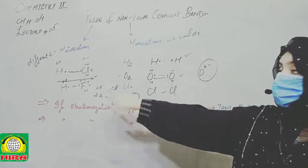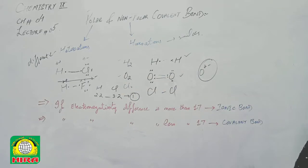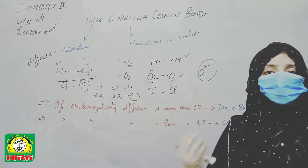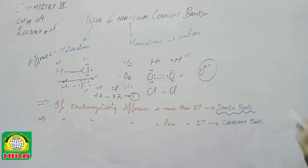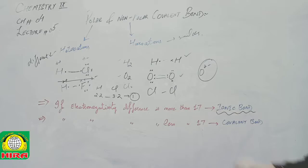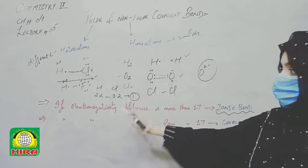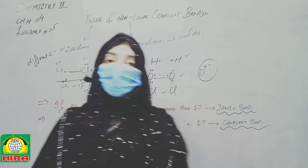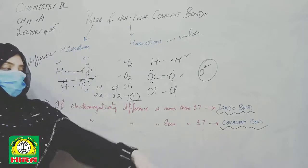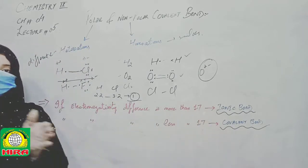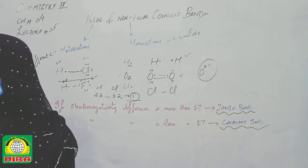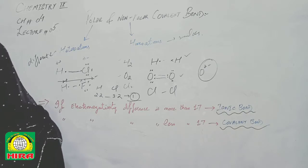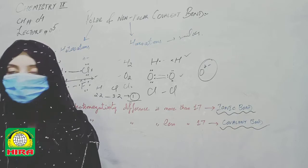An important point for MCQs: if the electronegativity difference between two atoms is between 0.7 and 1.7, the bond is a polar covalent bond. If the electronegativity difference is greater than 1.7, the bond becomes an ionic bond — not a covalent bond. So remember: 0 to 0.7 is non-polar covalent, 0.7 to 1.7 is polar covalent, and above 1.7 is ionic.